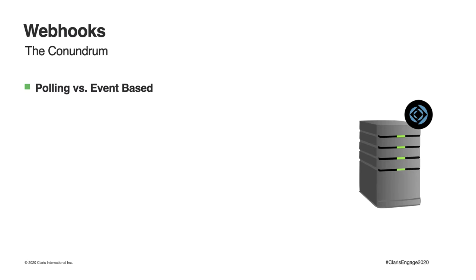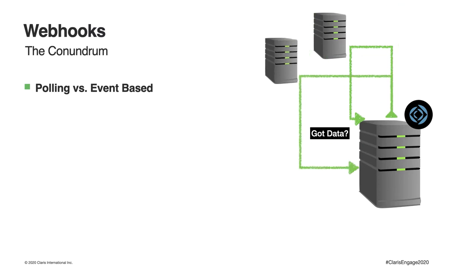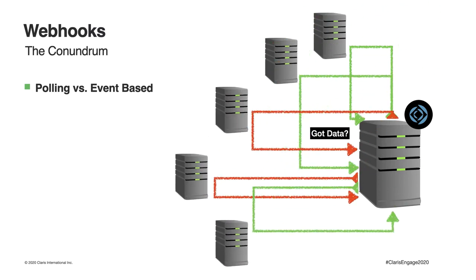That may be fine if you just have one system, but what if you have multiple systems to integrate with? Then you have to poll on a particular schedule across all of them. That is not very scalable — it will come to a point where your FileMaker server simply cannot find time for anything else. Also, from the other side, the other system does not want to get polled by potentially thousands of clients continuously. So we want our FileMaker systems to be good citizens and not overburden the other systems.